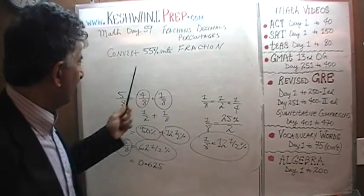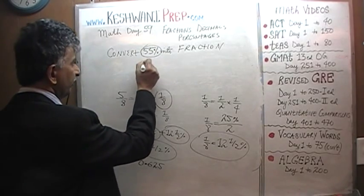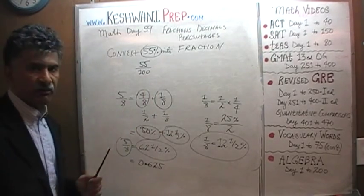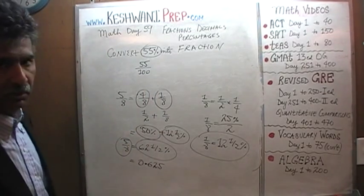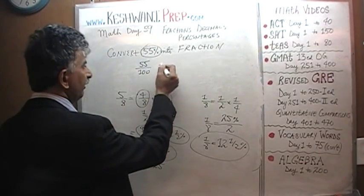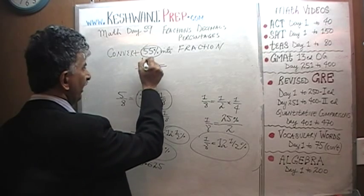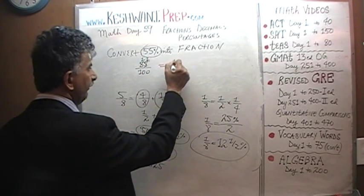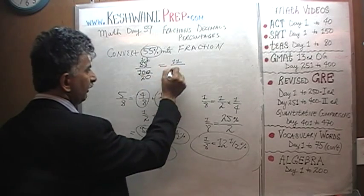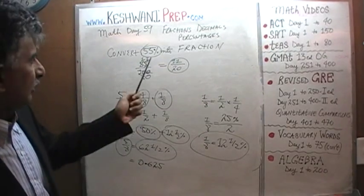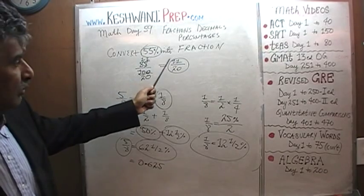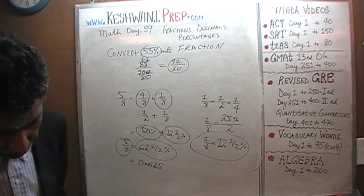For example, 55% — percent simply means 55 over 100. But no answer choices will be in this form; we have to reduce it. 55 is a multiple of 5, and 100 is a multiple of 5, so let's divide top and bottom by 5. 55 ÷ 5 is 11, and 100 ÷ 5 is 20. The answer is 55% converted into its most reduced fraction is 11 over 20. Let's do the next one.